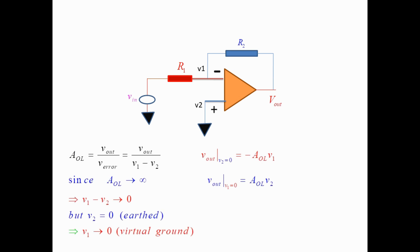If R2 and R1 are open and the non-inverting terminal is grounded, then V1 will appear at the output as minus A_ol times V1, where A_ol is the open-loop gain of the amplifier. If the inverting terminal is grounded, i.e., V1 equals 0, then V2 will appear at the output as A_ol times V2. So any error voltages V1 and V2 at input give V_output equal to A_ol times V_error, where V_error equals V1 minus V2. Now A_ol tends to infinity for an ideal op-amp, so V_error tends to 0.